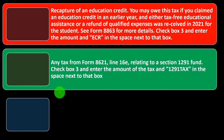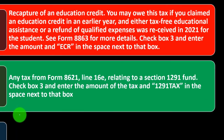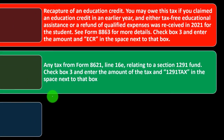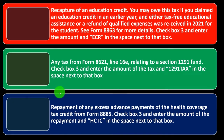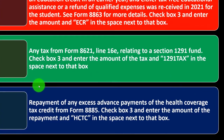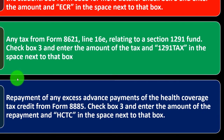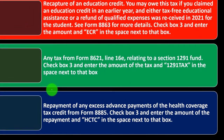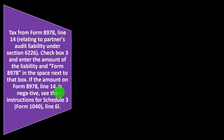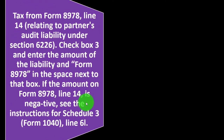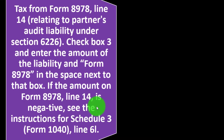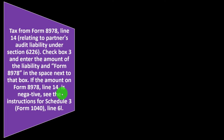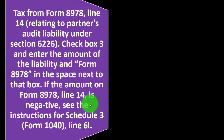Any tax from Form 8621 line 16E related to a Section 1291 fund — check box three and enter the amount of the tax and '1291 tax' in the space next to the box. Also report any repayment of advanced payments of the health coverage tax credit from Form 8885 — check box three and enter the amount of the repayment and 'HCTC' in the space next to that box. Tax from Form 8978 line 14 relating to partners' audit liability under Section 6226 — check box three and enter the amount and 'Form 8978' in the space next to that box.